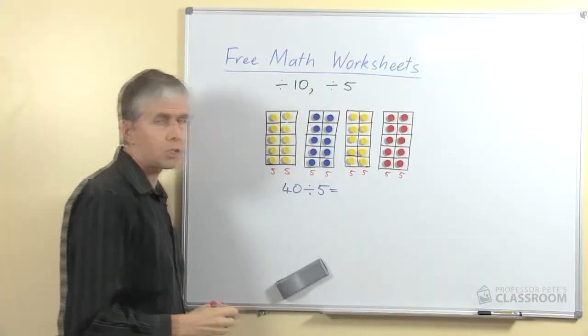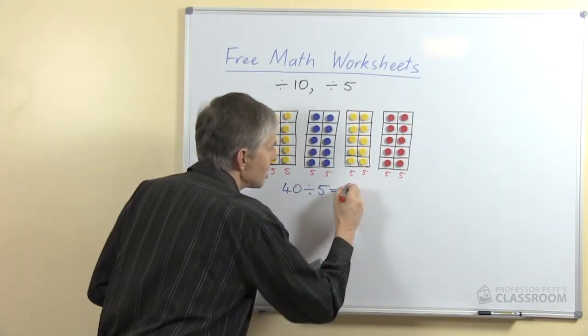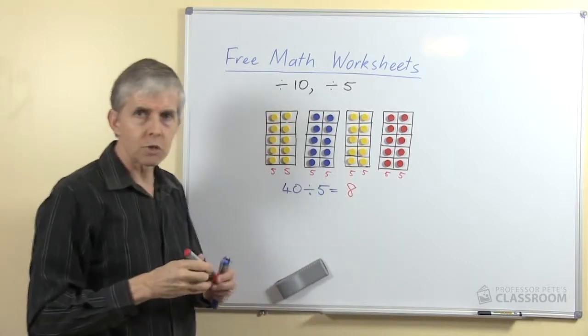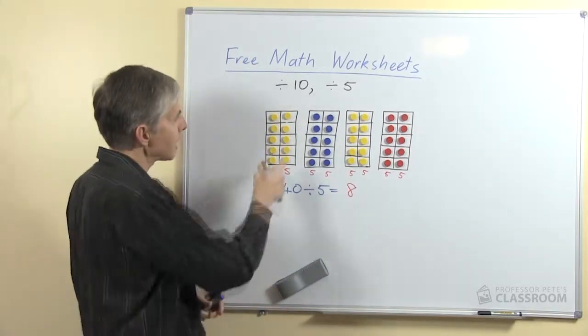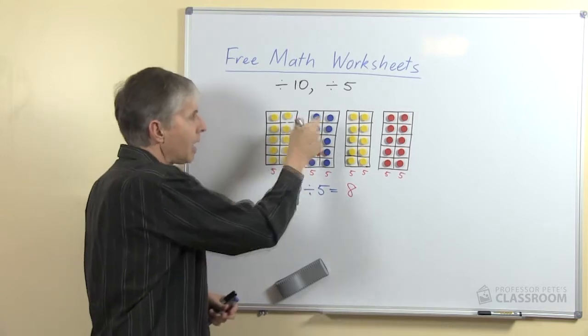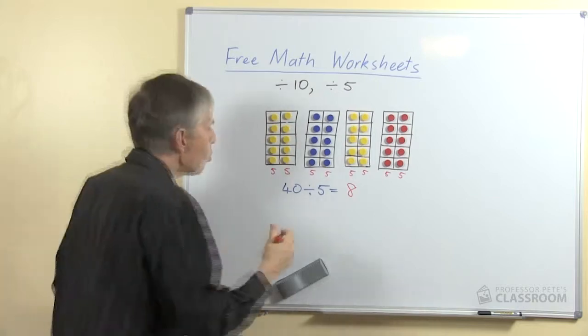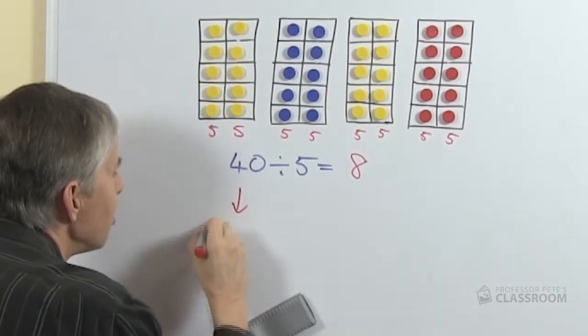And so I suspect what they might do first off is count the number of 5's and go, look, there's 8, that must be the answer. But we can draw our students' attention to the fact that each group of 10 is made up of two 5's, and every 10 has two 5's. So if we know the number of tens, what would we get if we doubled it?